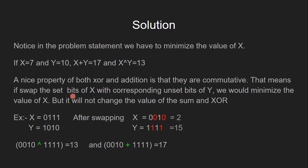Let's see how to solve this problem. Notice in the problem statement we have to minimize the value of X. Before we go ahead let's see an example. If X equals 7 and Y equals 10, then sum of X and Y is 17 and the XOR of X and Y is 13.